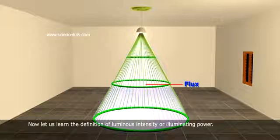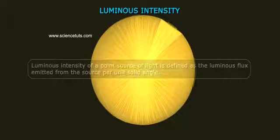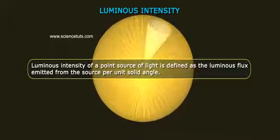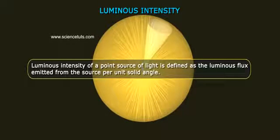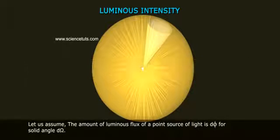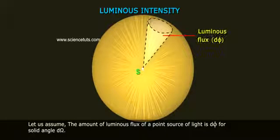Now let us learn the definition of luminous intensity or illuminating power. Luminous intensity of a point source of light is defined as the luminous flux emitted from the source per unit solid angle. Let us assume the amount of luminous flux of a point source of light is dφ for solid angle dΩ.